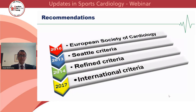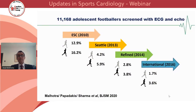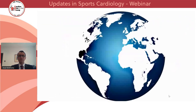Expert criteria have evolved over the past decade, culminating in international recommendations that account for age and ethnicity. Namely, T-wave inversion in V1 to V4 is considered a normal variant in black athletes, and T-wave inversion in V1 to V2 as a normal variant amongst white athletes. We showed recently that false positive rates reduced to as low as 1.7% in white athletes and 3.6% in black adolescent athletes screened with ECG and echocardiogram — which would be considered acceptable by any large-scale screening program. However, little attention has been given to whether the heart of the black athlete is universal, or whether substantial differences exist according to geographic origin.